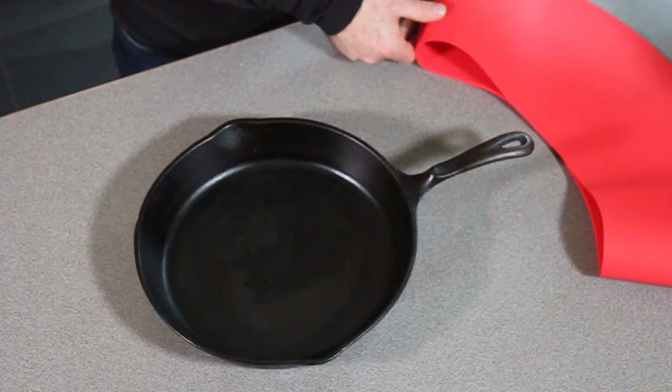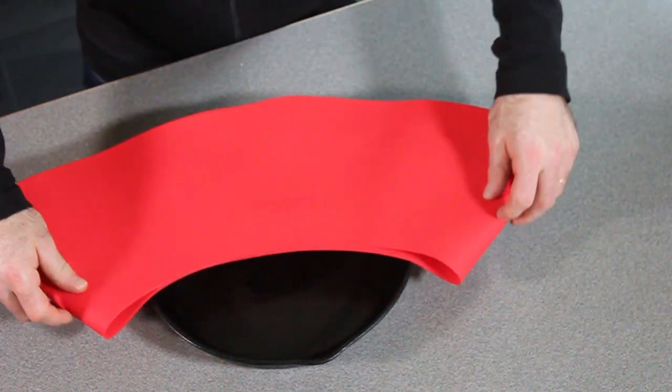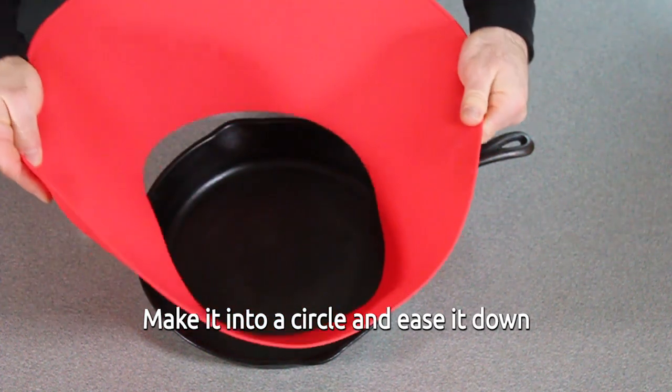Notice that when you put your frywall on top of your pan, it may initially look too big. But once you turn it into a circle and put it in, it should fit perfectly.